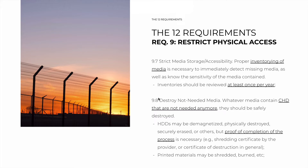Sub-requirement 9.8 is about destroying media that are not needed. Just like purging unneeded logical data in requirement 3, we're now talking about purging physical media that are no longer needed. Whatever medium — paper, hard drives, USB drives — they should be safely destroyed. Hard drives may be degaussed, physically destroyed, securely erased, zeroed out, or others. But whatever the medium, proof of completion is necessary — for example, a shredding certificate by the provider or a certificate of destruction. Printed materials may be shredded, burned, or others, but they also require a certificate of destruction. Every destruction type requires one.